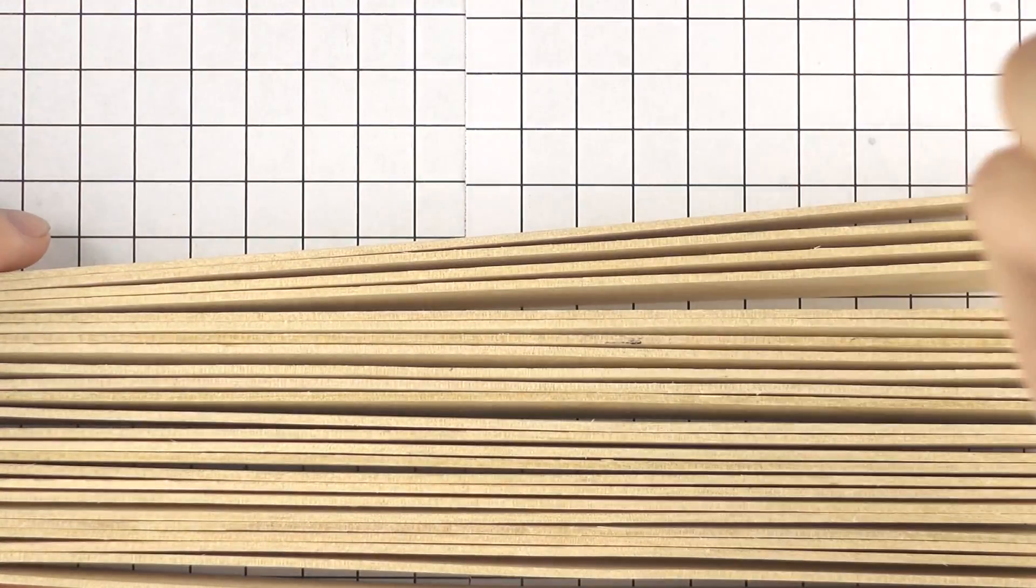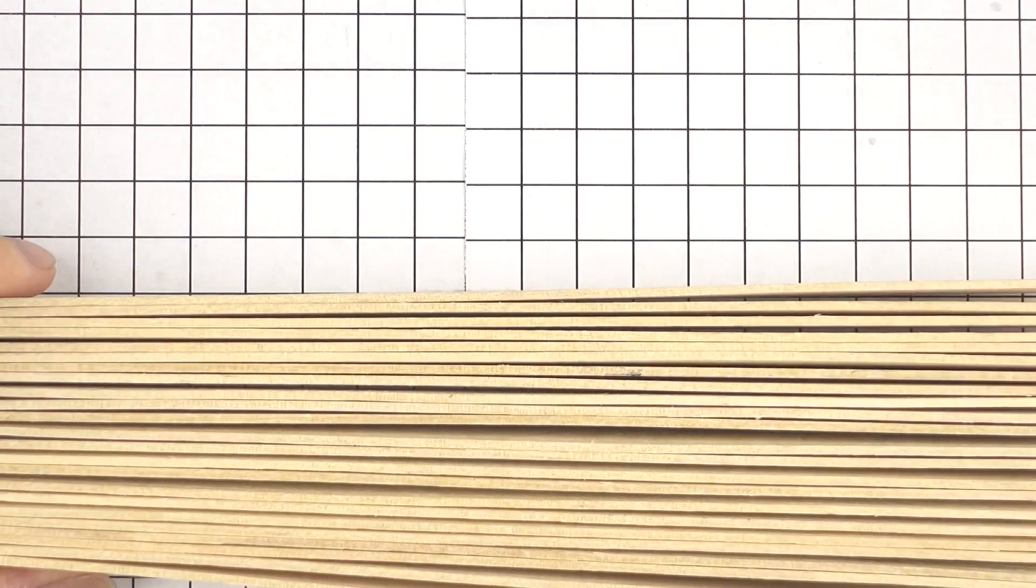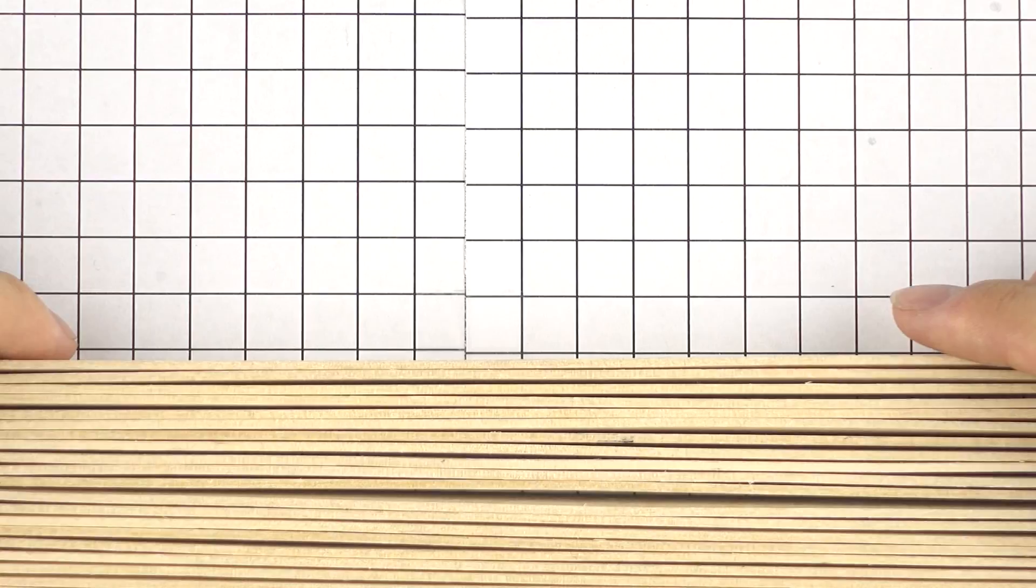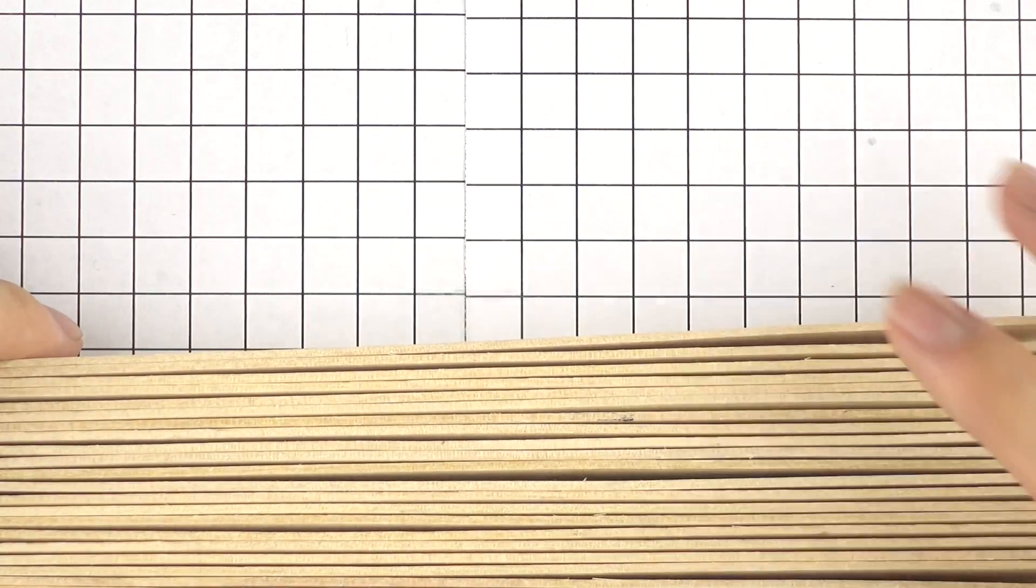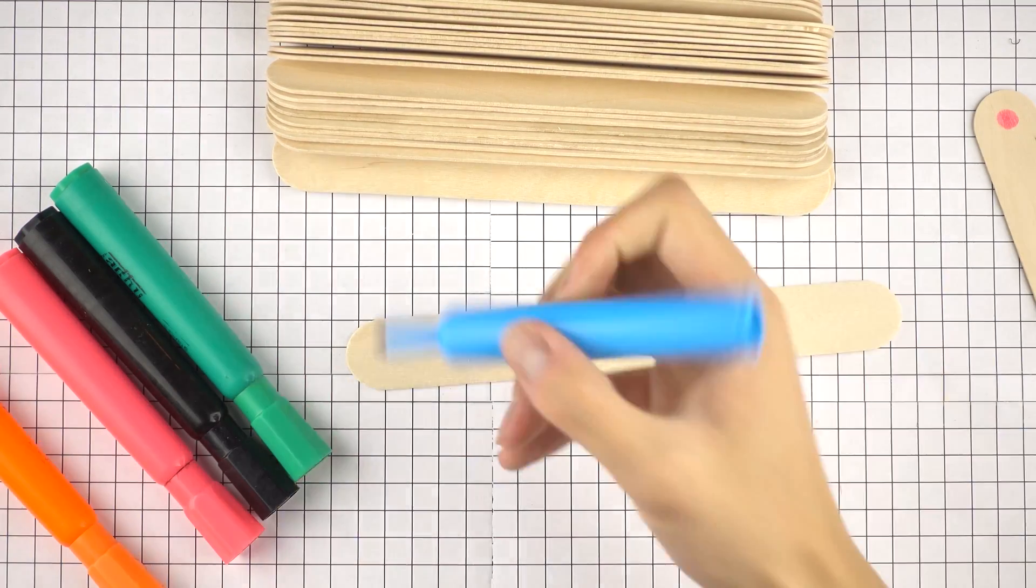The quality of it is not so great, so first we must check that all of the popsicle sticks are straight. If the popsicle sticks are not straight they might cause some unexpected problems when they are placed in a chain. Now that we have sorted through all of them, it's time to make some marks.